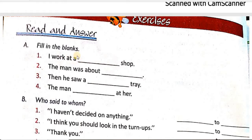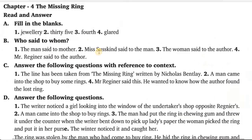Pahla part ka hai filling in the blanks. I worked at a dash shop — I worked at a jewelry shop. Main kahan kaam karta hun? Jewelry shop pe. The man was about 35. Wo admi kitti umar ka tha? 35 ka. Then he saw a dash tray — then he saw a fourth tray.